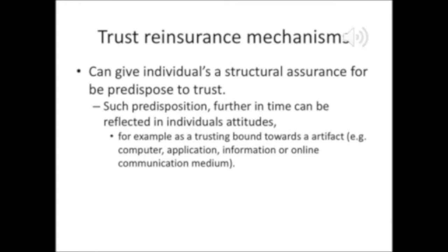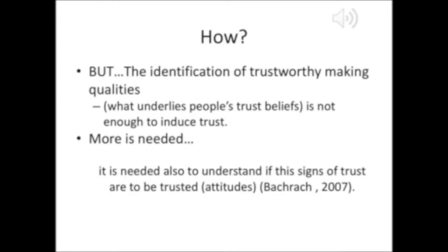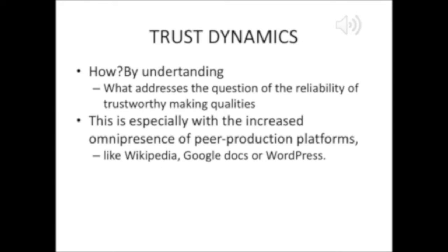Anyway, the trust assurance mechanisms can diminish our uncertainty of the situation and help us become more open to trust. As this is a very complex topic, being able to identify present trust warranty qualities or reinsurance qualities is not enough to understand if the identified qualities are sufficient. We need to understand if those qualities that we have identified are to be trusted or not. That is why trust is a very dynamic practice — one that we must continually study.